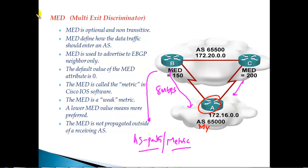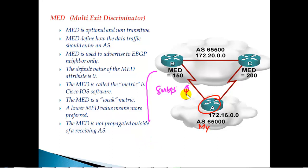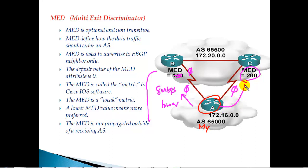Cisco calls MED 'metric' in IOS terminology, but we refer to it as MED. What I can do is apply MED values on both sides. By default, the MED value is zero on both sides. I can configure the metric on one side lower than the other — for example, leaving the default MED value of zero on one side and configuring a MED value of 200 on the other. So on router A, I am going to configure MED value higher on one side — default is zero here, and we apply 200 on the other.